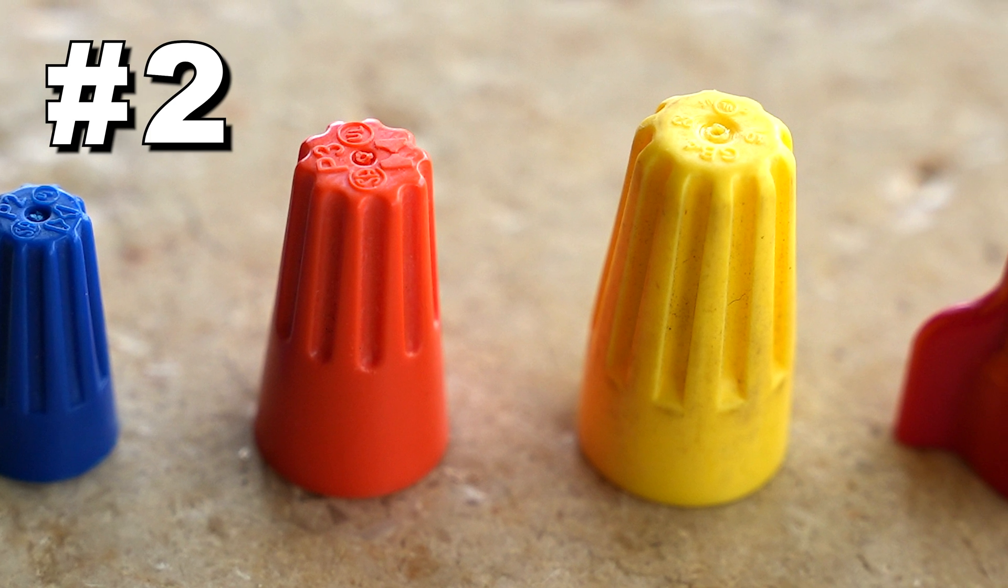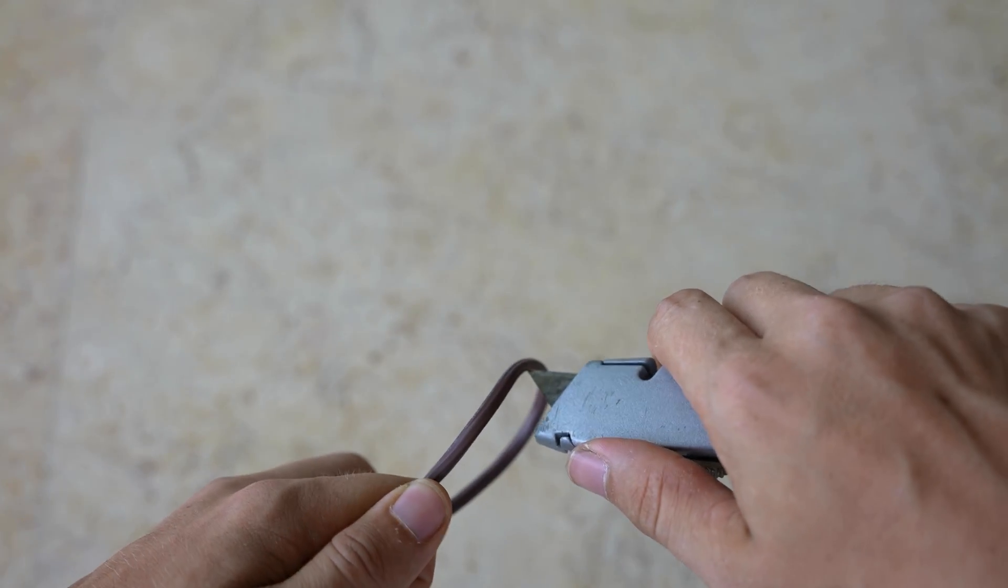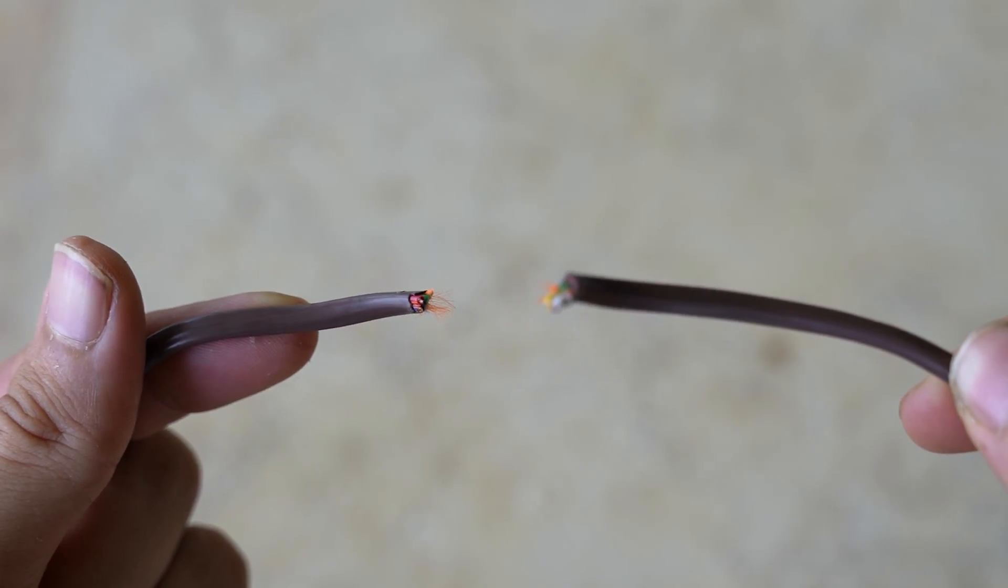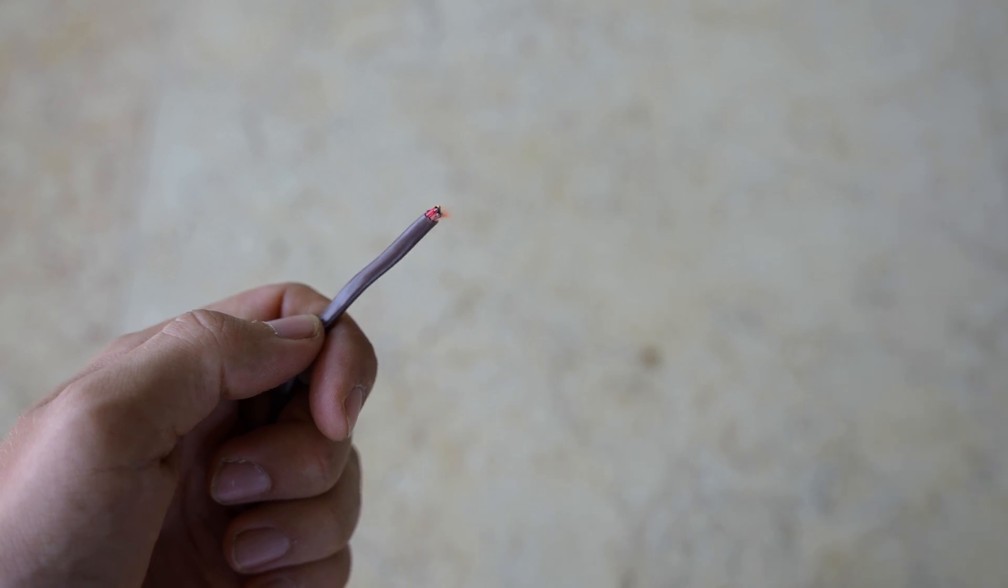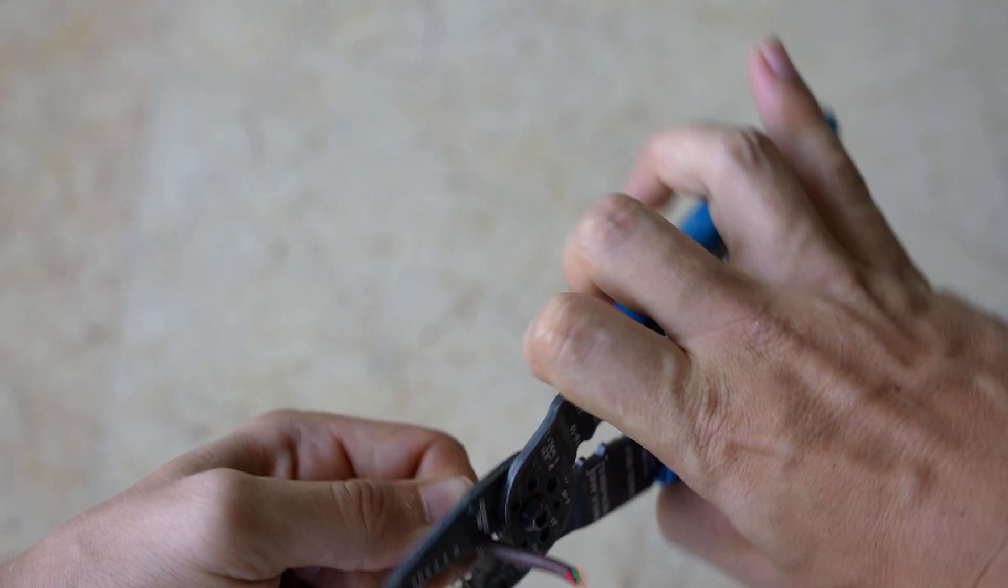Method number 2 is using a wire nut. This right here is an air conditioner low voltage cable. You just finished mowing the lawn and you are now happily weed whacking around the air conditioner. Next thing you know, the cable is cleanly cut in half. Oh snap. But don't worry, we can fix this. First, remove about an inch of the cable jacket.